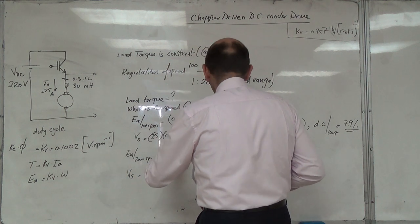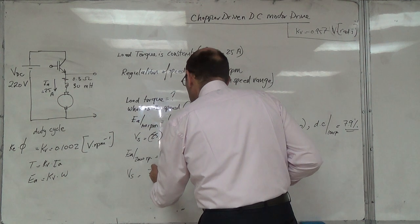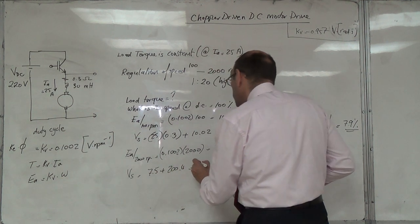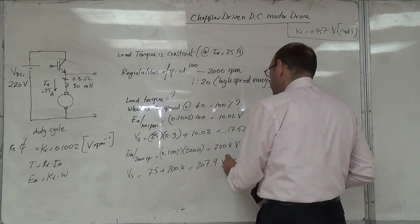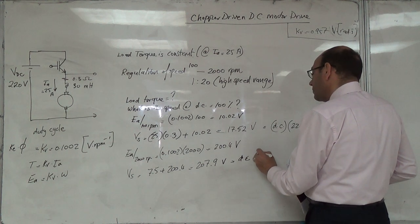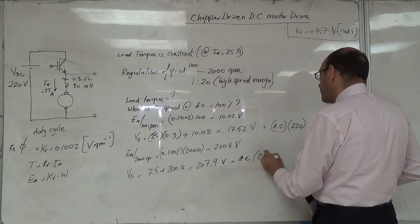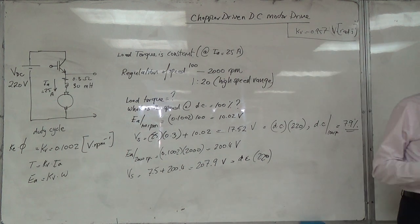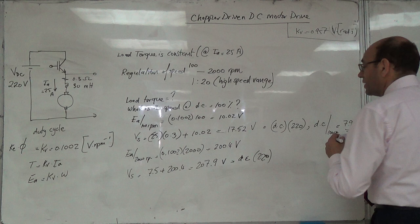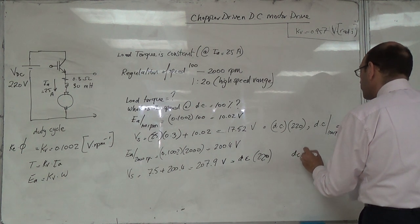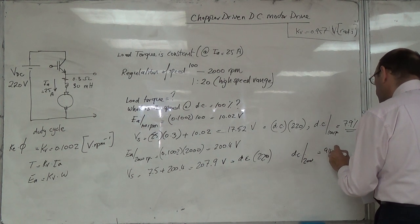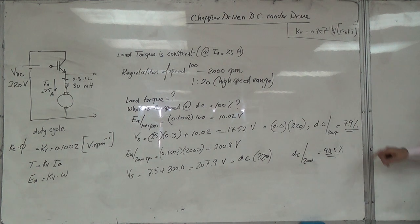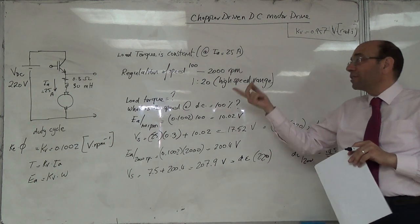7.5 plus 2.4 equals 207.9 volts. If it came out 220, no problem. So 27.9 over 220 equals 94.5 percent. So I will change the duty cycle until the speed changes.